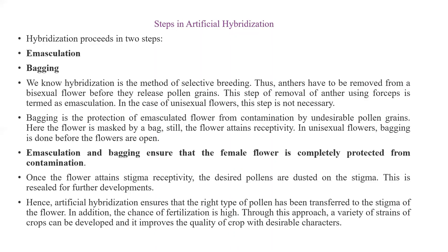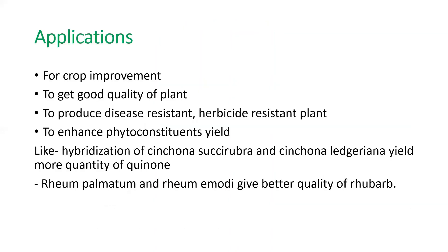Artificial hybridization ensures the right type of pollen has been transferred to the stigma of the flower — that means we dust the flower with the desired pollen we want. Through this approach, variants of strains of crops can be developed, improving the quality of crops with desirable characters of our interest.